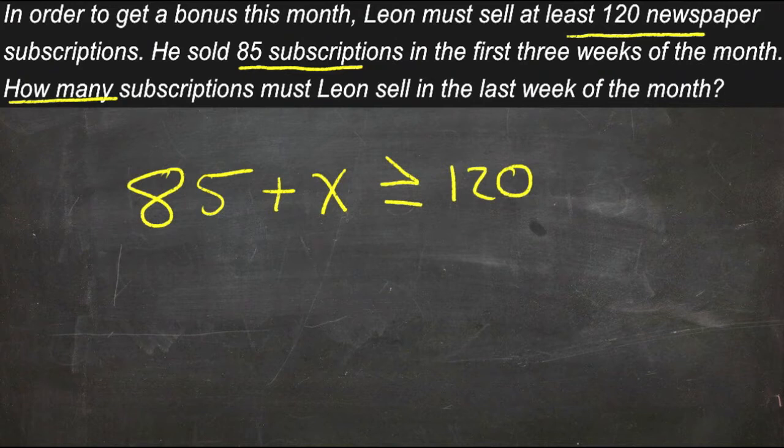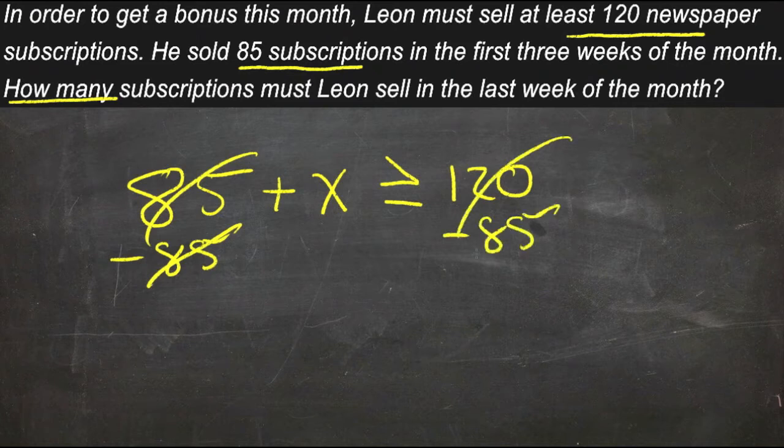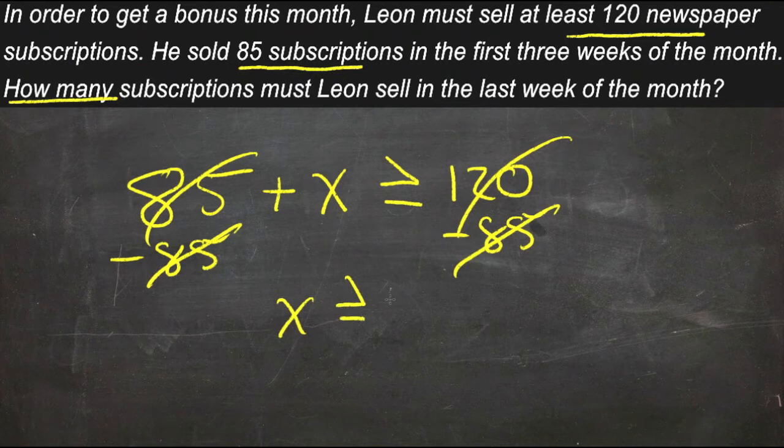Looks right. So now we just need to solve for x. We'll subtract 85 from both sides. And we get x is greater than or equal to 35.